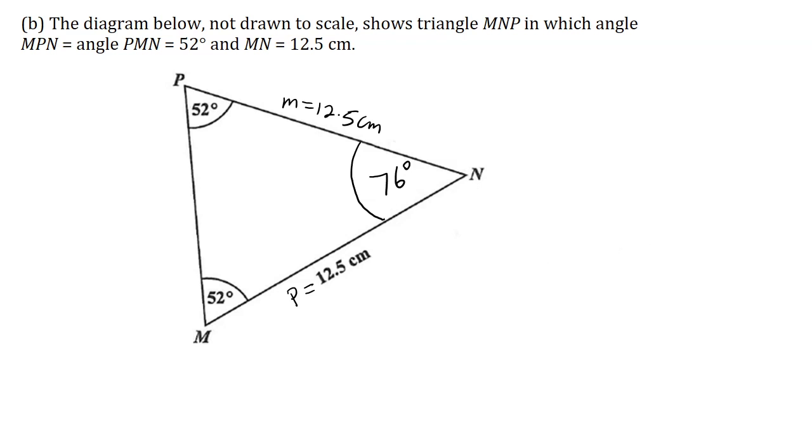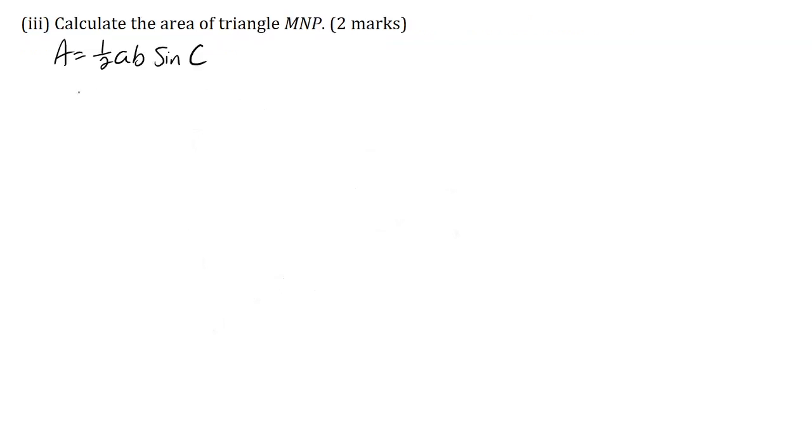This equals a half M P sine angle N. Substituting the values: this is a half multiplied by 12.5 multiplied by 12.5 multiplied by sine 76 degrees. Multiplying this out on my calculator, I am getting 75.8 centimeters squared.